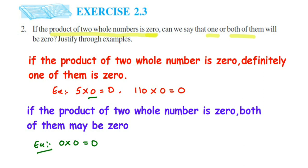So here we have justified both statements — in the first case if one number is zero the answer is zero, and in the second case if both numbers are zero the answer is also zero. That's it for this simple question — you just give an example and explain it. If you have further questions from this exercise, chapter, or any other class, drop a comment and I'll try to make a video on it. Thank you so much for watching.